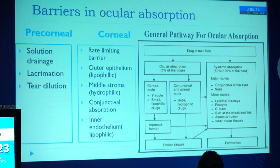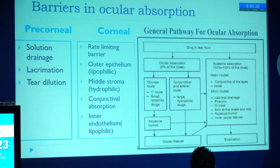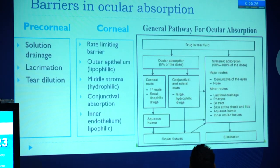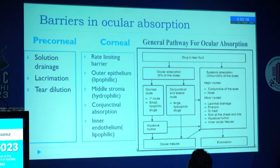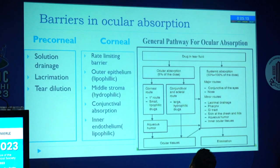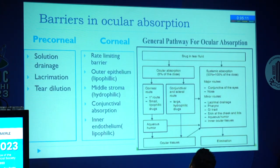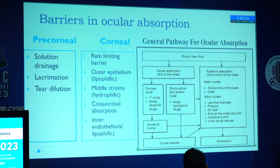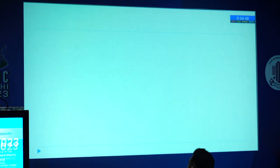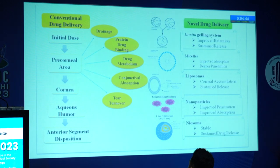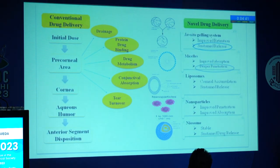The barriers in ocular drug absorption may be at the precorneal level or at the corneal level. At the precorneal level, the drug can get diluted in tears and drain through the nasolacrimal duct into systemic absorption. At the corneal level, it is a rate-limiting barrier wherein the outer epithelium is lipophilic, the middle is hydrophilic, and the inner endothelium is lipophilic again. So the drug has to be both lipid soluble and water soluble. Apart from corneal absorption, there is scleral and conjunctival absorption, which reduces drug bioavailability.